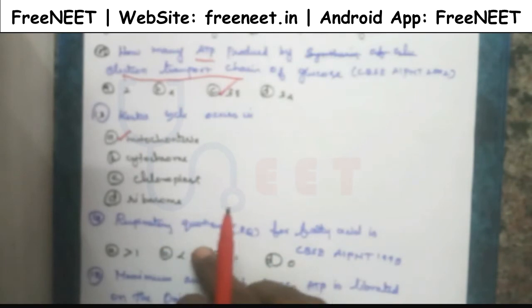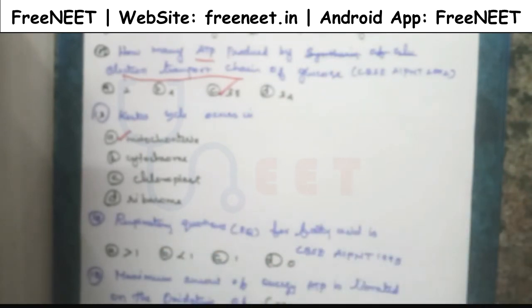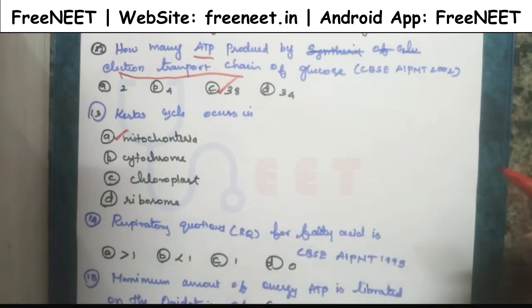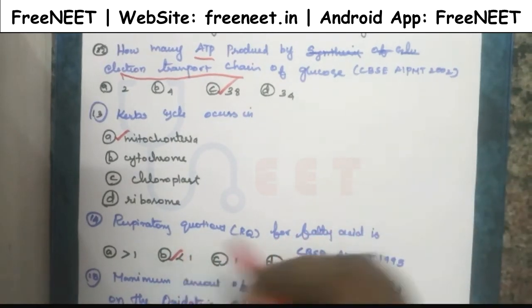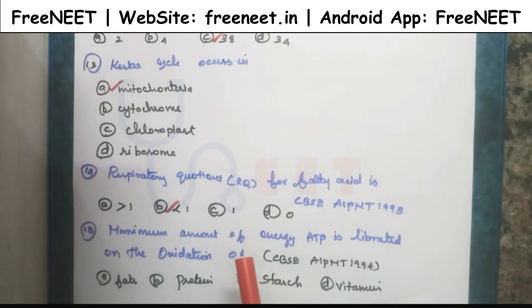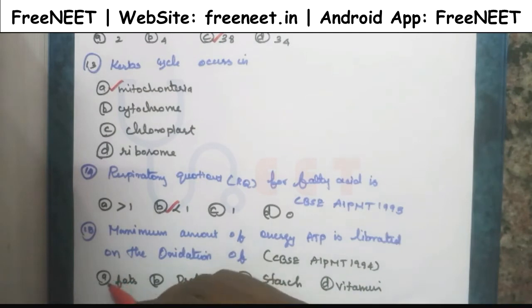The respiratory quotient (RQ) for fatty acids is always less than one. The next question: the maximum amount of energy (ATP) is liberated on the oxidation of — the answer is fats, since fats yield the maximum amount of energy upon oxidation.